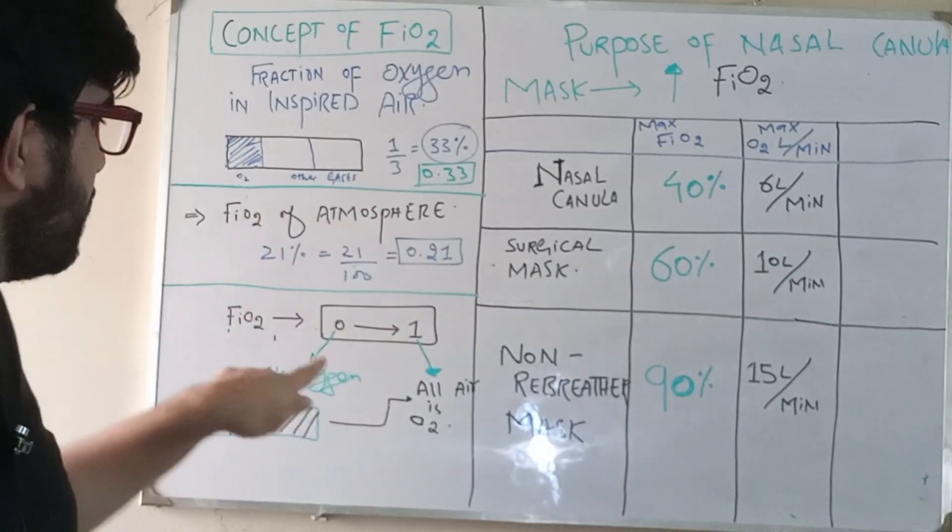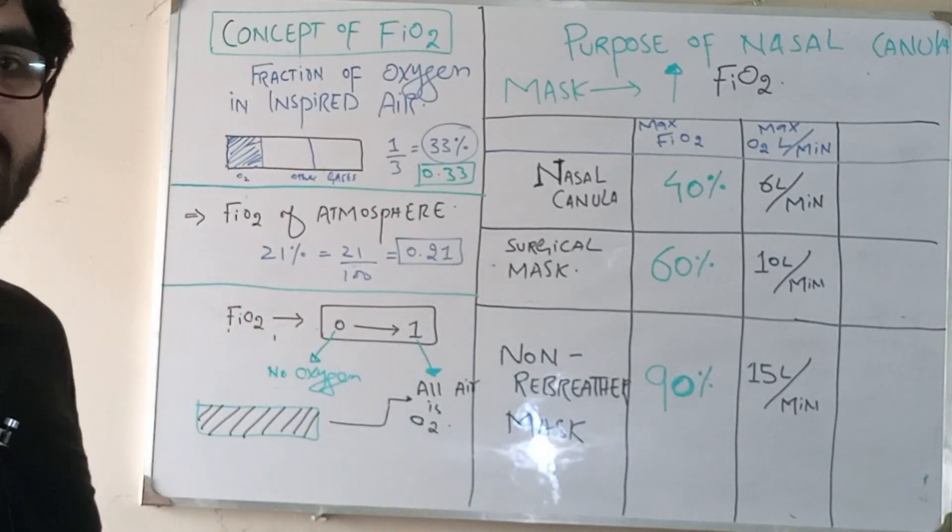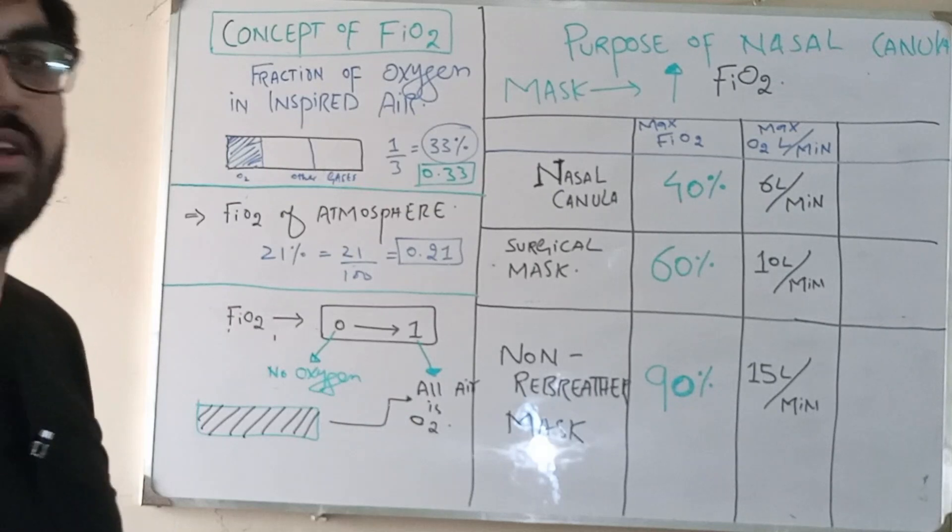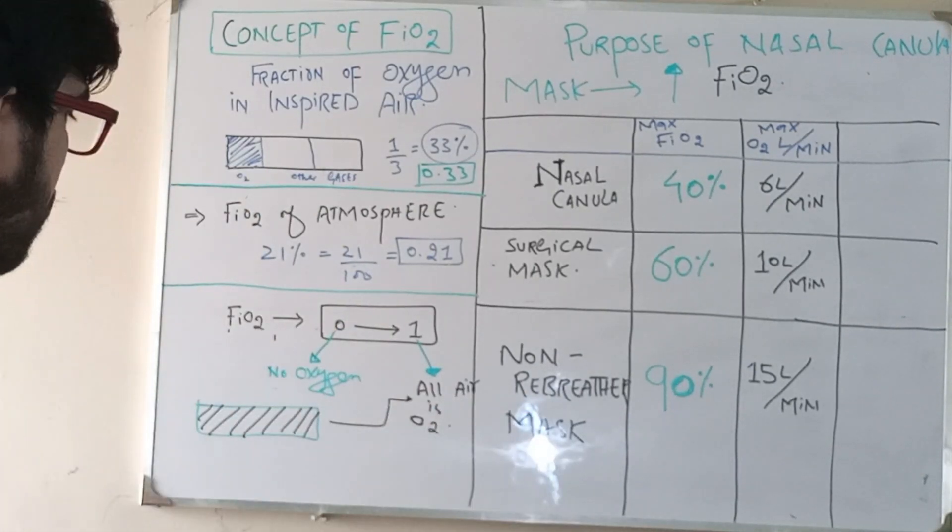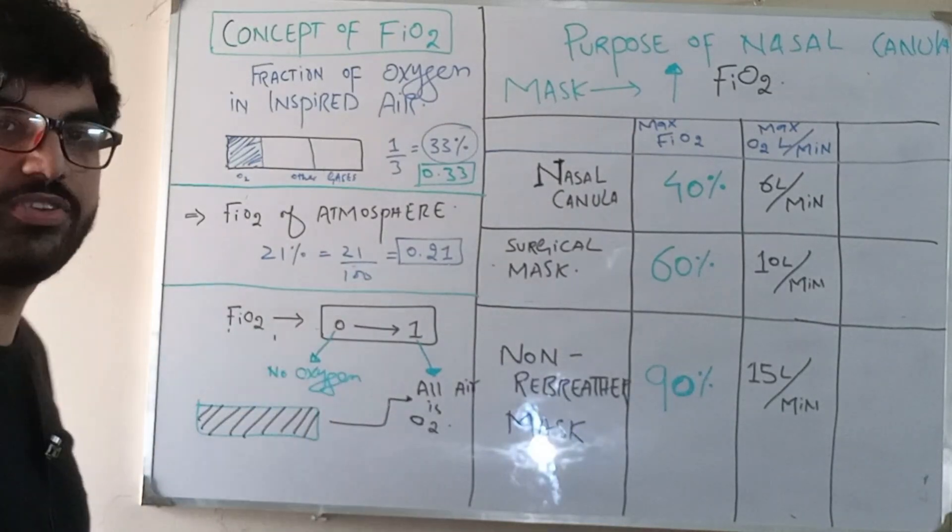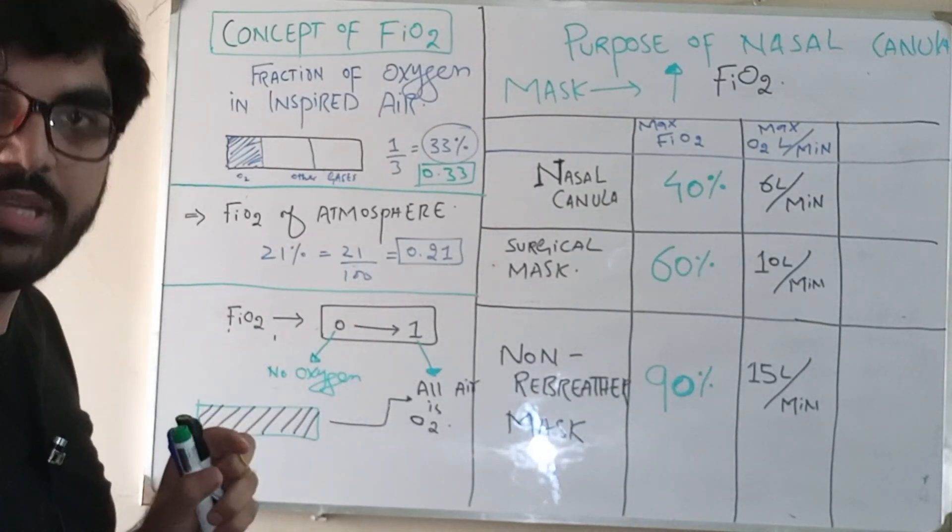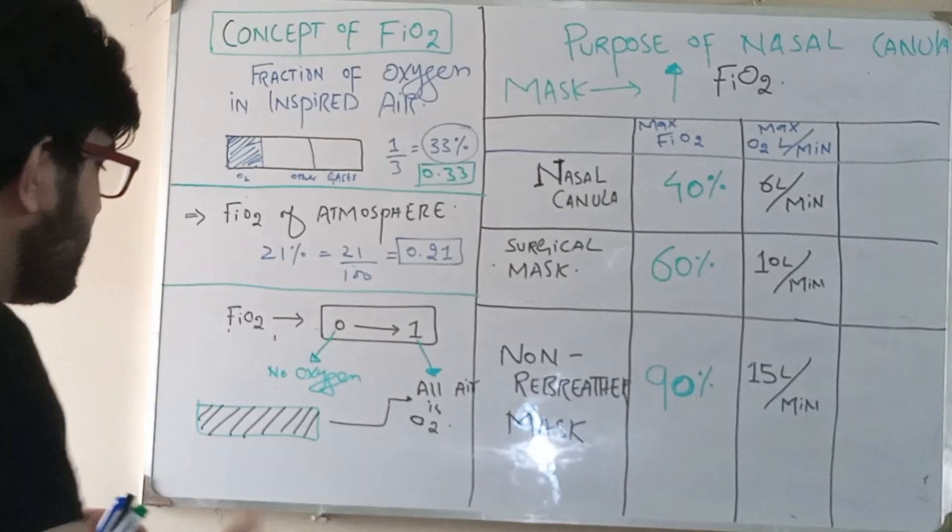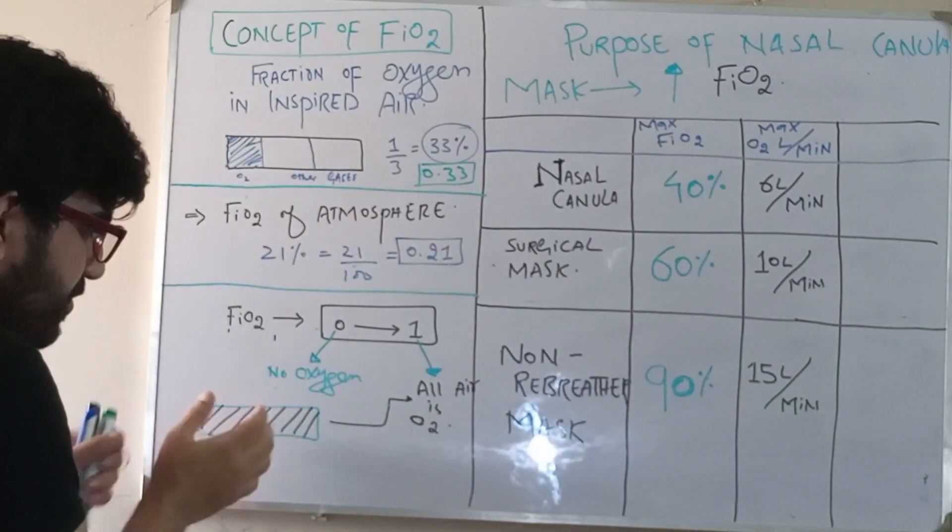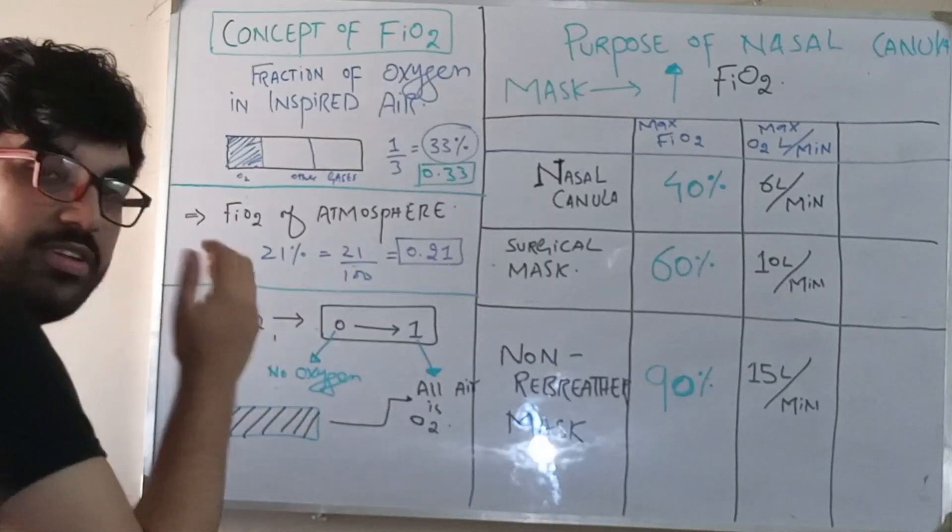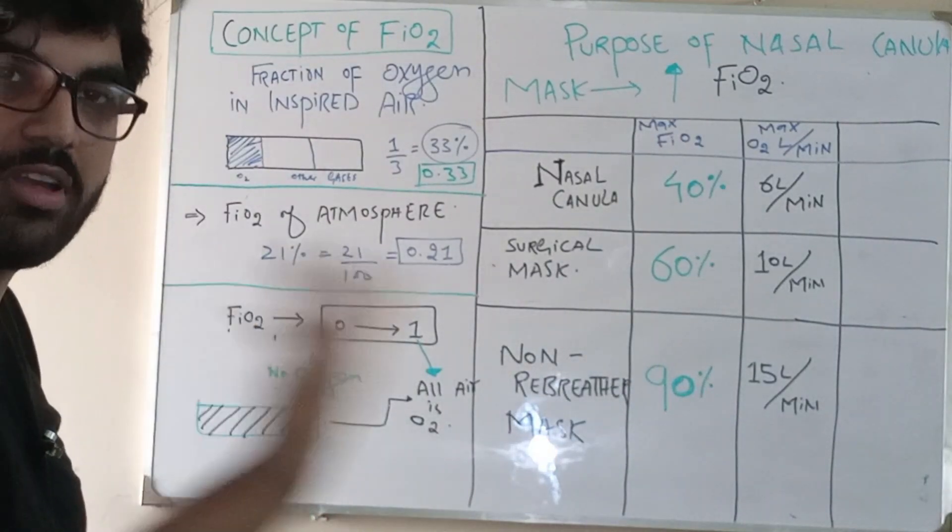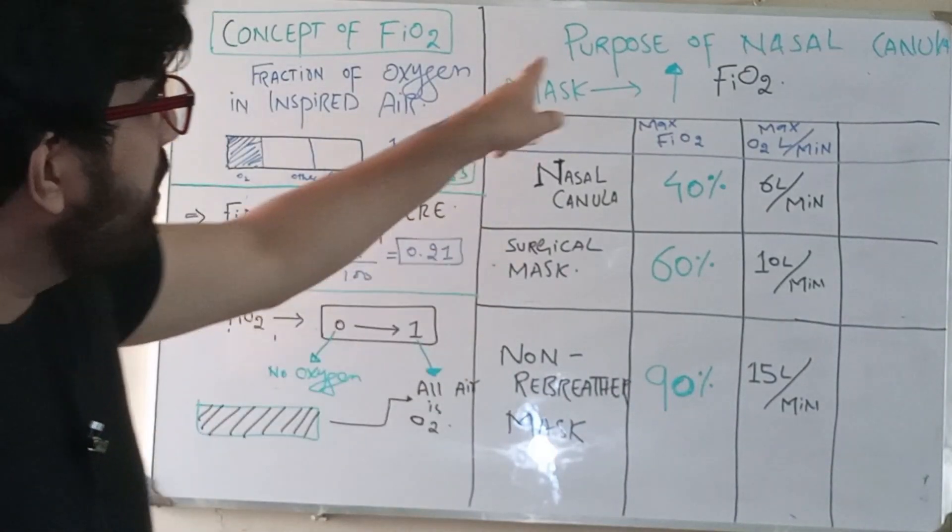Zero means there is no oxygen in the given air. One means the whole air consists of only oxygen. 50% FiO2 means that 50% of that amount of air is oxygen while the other 50% are other gases.